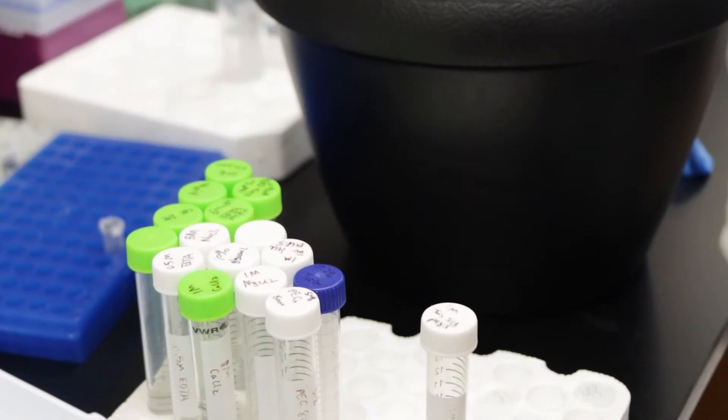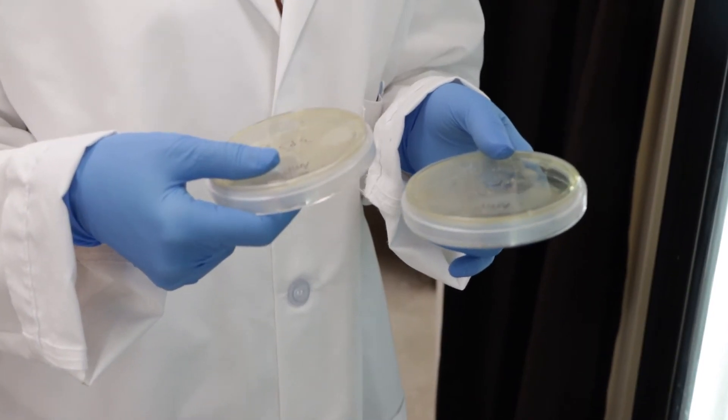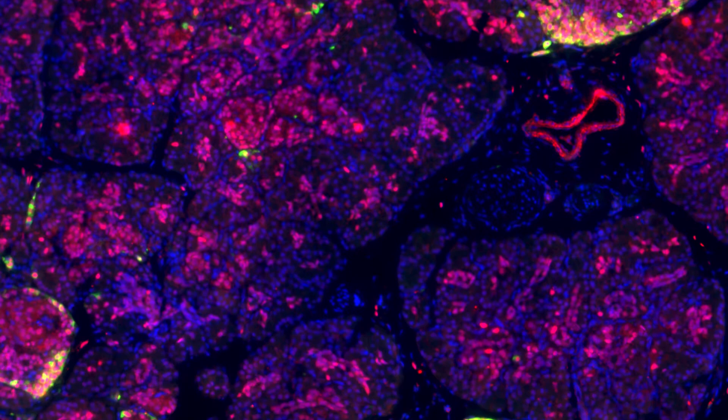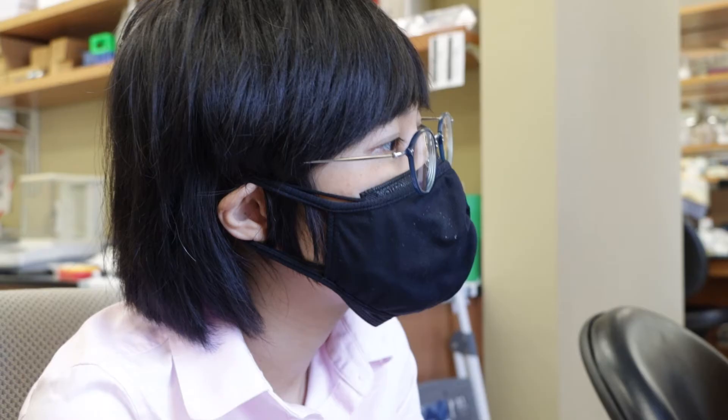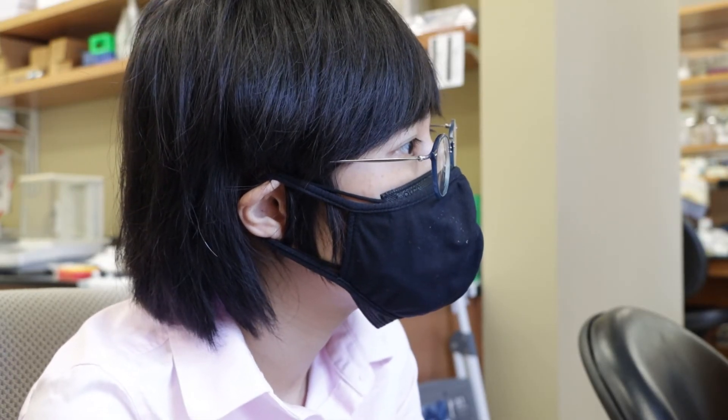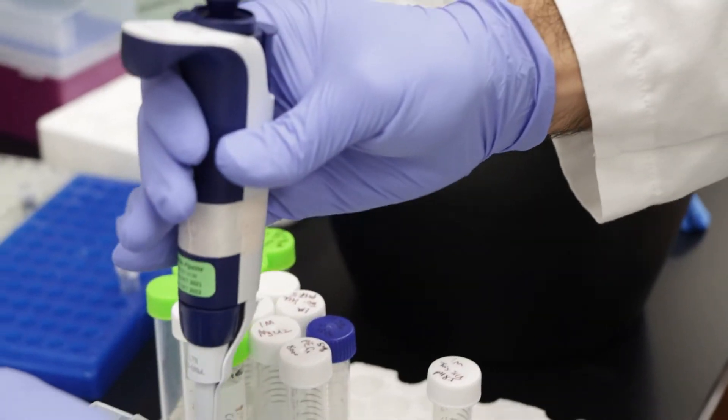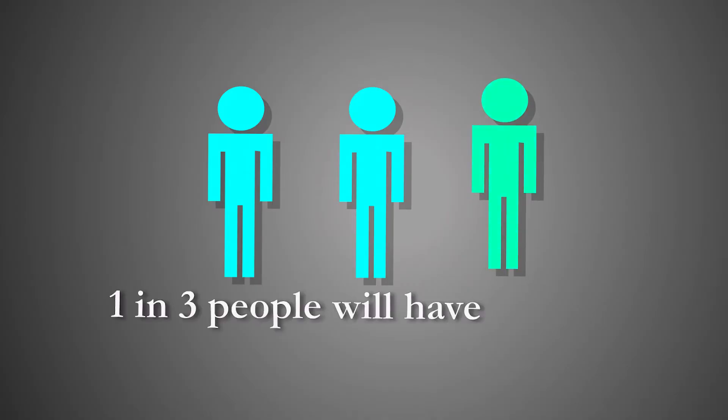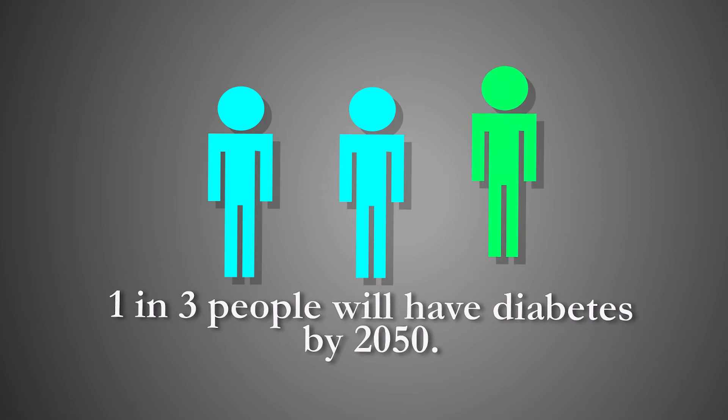We try to understand diabetes from the molecular perspective. We want to see what went wrong in the gene expressions in the beta cells. Hopefully by understanding this process we can find new cures or new directions to develop a cure for diabetes. Diabetes is one of the most important diseases — it's estimated that one in three people by 2050 will have diabetes.